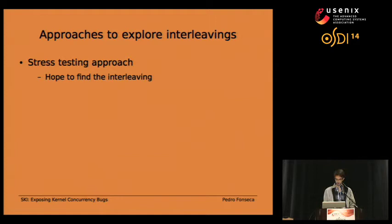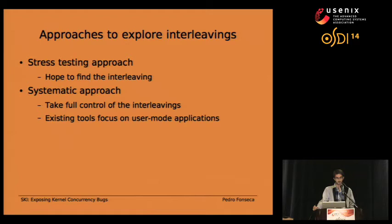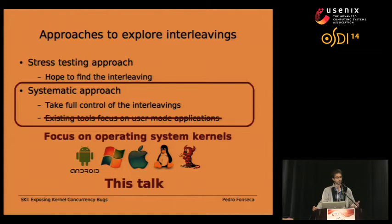Researchers have noticed this is a problem and came up with a more systematic approach. In a systematic approach, developers use a testing tool that takes full control over the interleaving of the application they want to test, and explores the interleaving space according to its own policies, picking interleavings that are more likely to be interesting. This approach has been shown to be effective for user-mode applications, but existing work has focused only on user-mode applications. This talk is about a systematic approach focusing on kernel code.